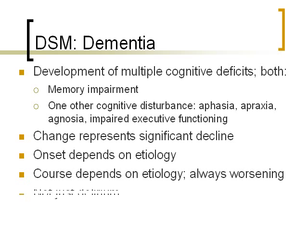Dementia is unlike delirium, which is usually a temporary condition you can recover from. You also have to rule out that what you're seeing isn't just delirium. And someone can have both — dementia with periods of delirium superimposed on top. You always want to ask: is this temporary, is it a delirium, or are these cognitive deficits more permanent? If permanent, it might be dementia.